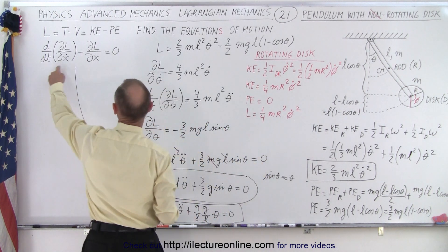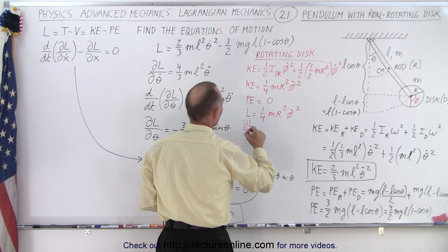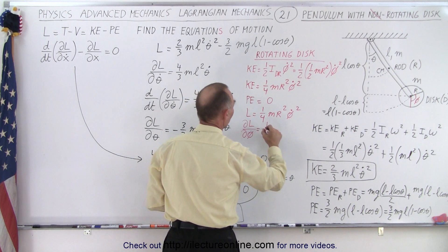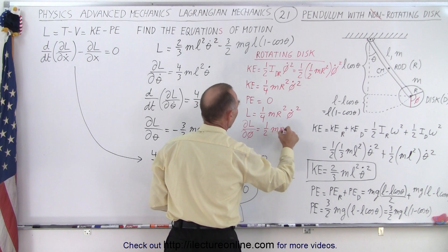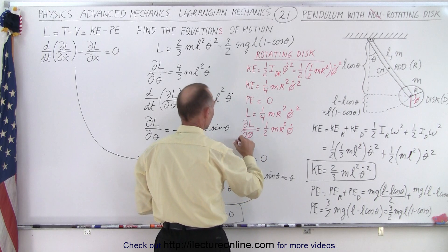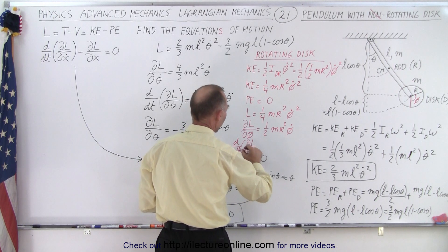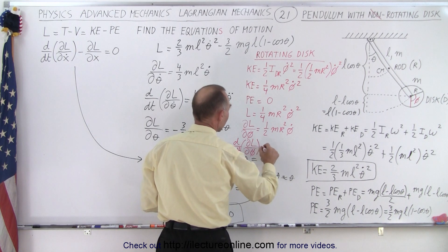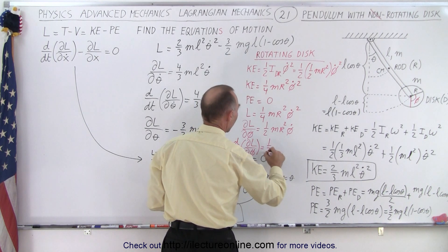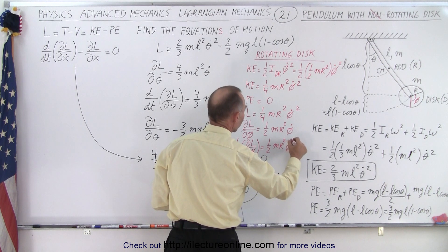And then to find the equation of motion, we're going to find the partial derivative, the partial of L with respect to phi dot, which is then going to be equal to one half m r squared phi dot. And then if we take the time derivative, the d/dt of the partial of L with respect to phi dot, that's going to be equal to one half m r squared phi double dot.